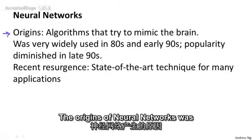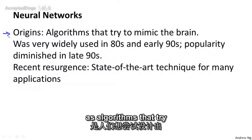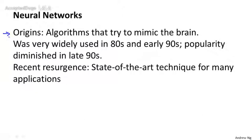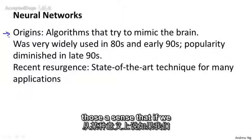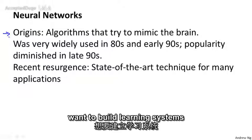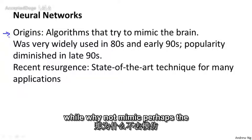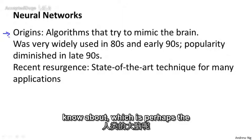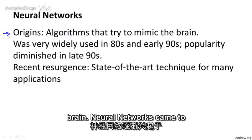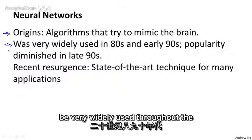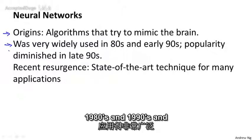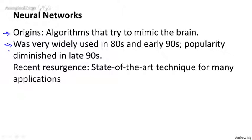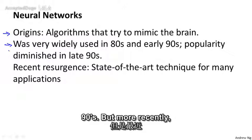The origins of neural networks was as algorithms that try to mimic the brain, and there was a sense that if we want to build learning systems, well, why not mimic perhaps the most amazing learning machine we know about — which is perhaps the brain. Neural networks came to be very widely used throughout the 1980s and 1990s, and for various reasons their popularity diminished in the late 90s.